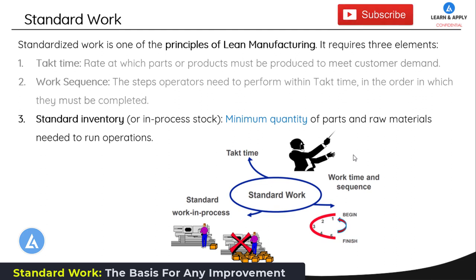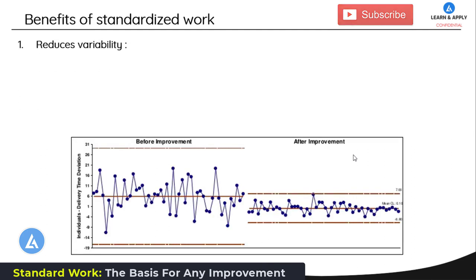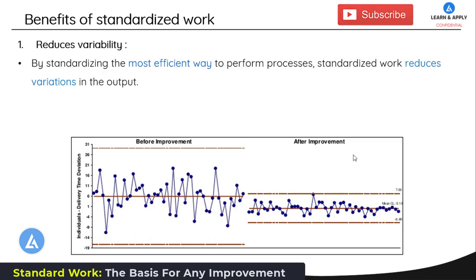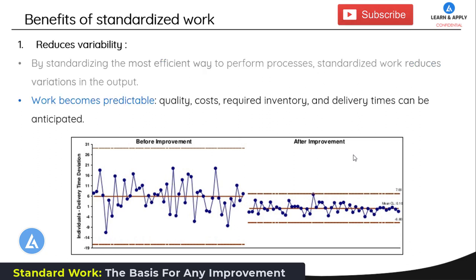Based on these three important elements we can define standard work. Now let's understand the benefits. The first important benefit is it reduces variability. By standardizing the most efficient way to perform processes, standardized work reduces variations in output. Looking at the diagram showing before and after improvement, once we implement standardized work we see a reduction in variation, giving us more consistent quality of products and services, thereby increasing customer satisfaction. Work becomes more predictable because quality, cost, required inventory, and delivery times can be anticipated.